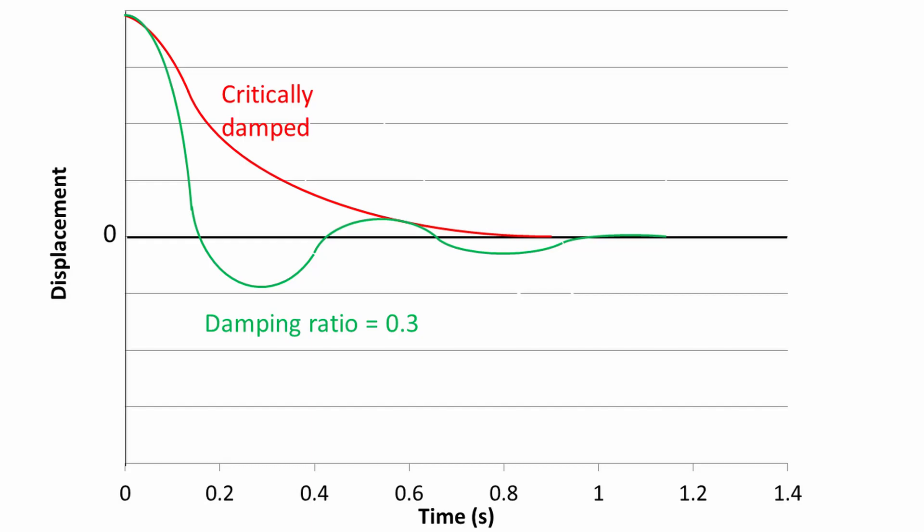The parameter we use in selecting damper behaviour is called the damping ratio — the ratio of actual damping compared to critical damping. For automotive applications — cars, trucks, and so on — we normally go for a damping ratio of about 0.3. That means we get approximately three oscillations before the body returns to its normal ride height.